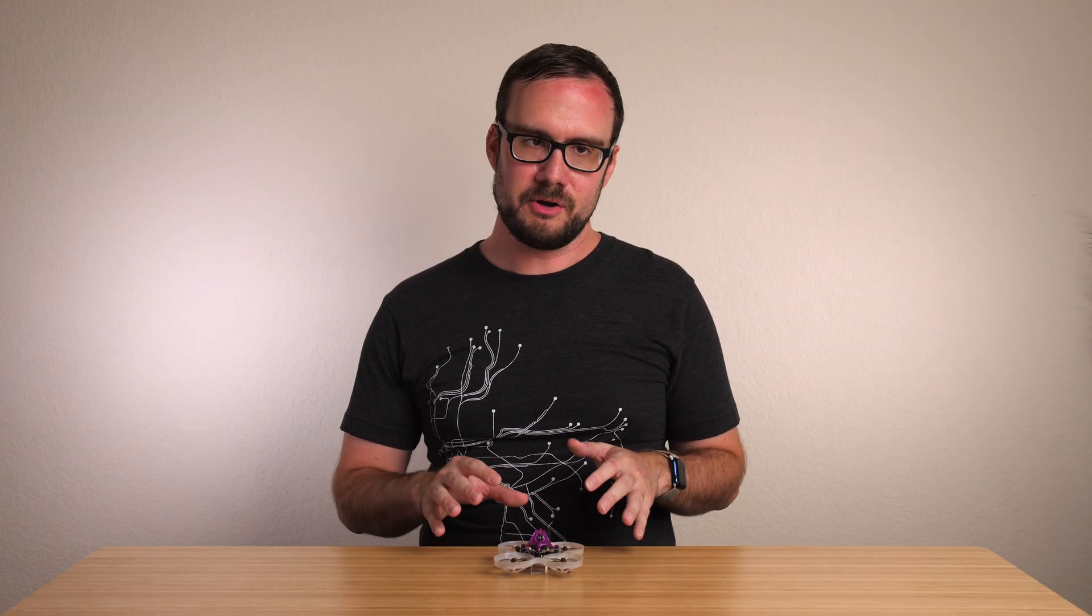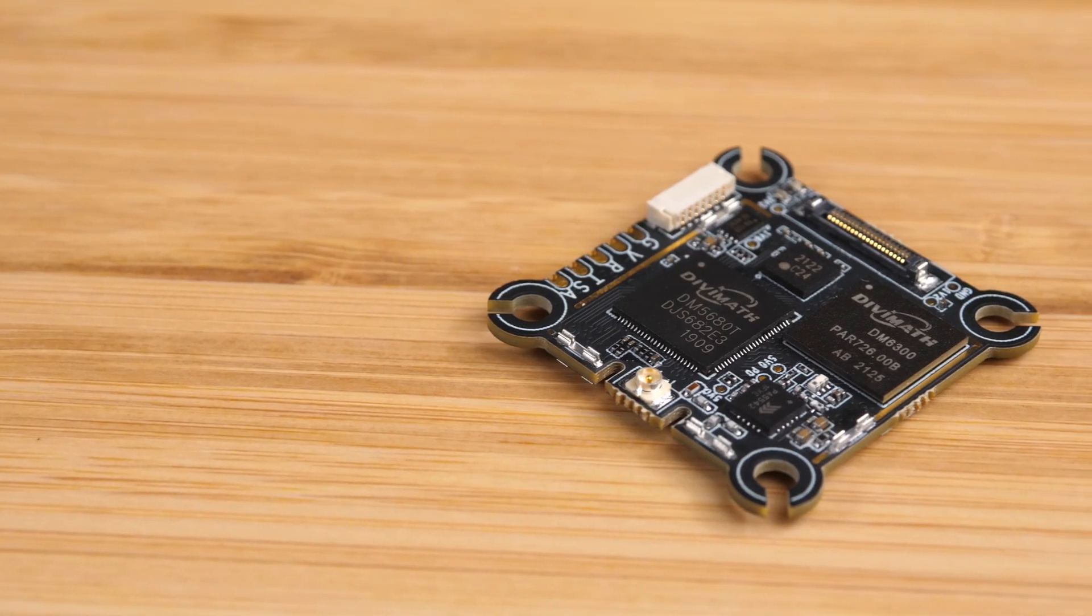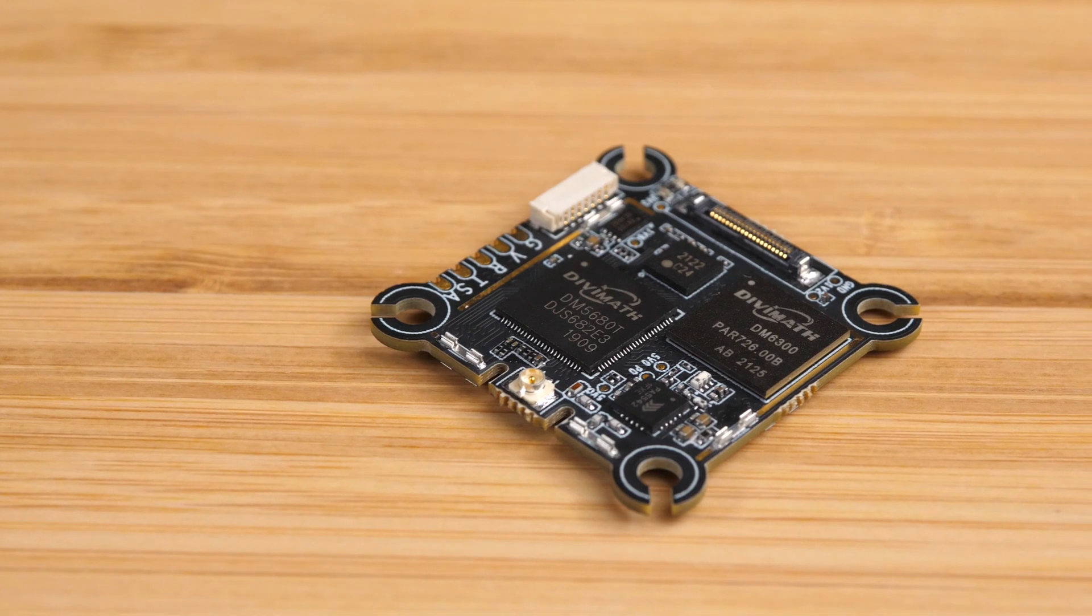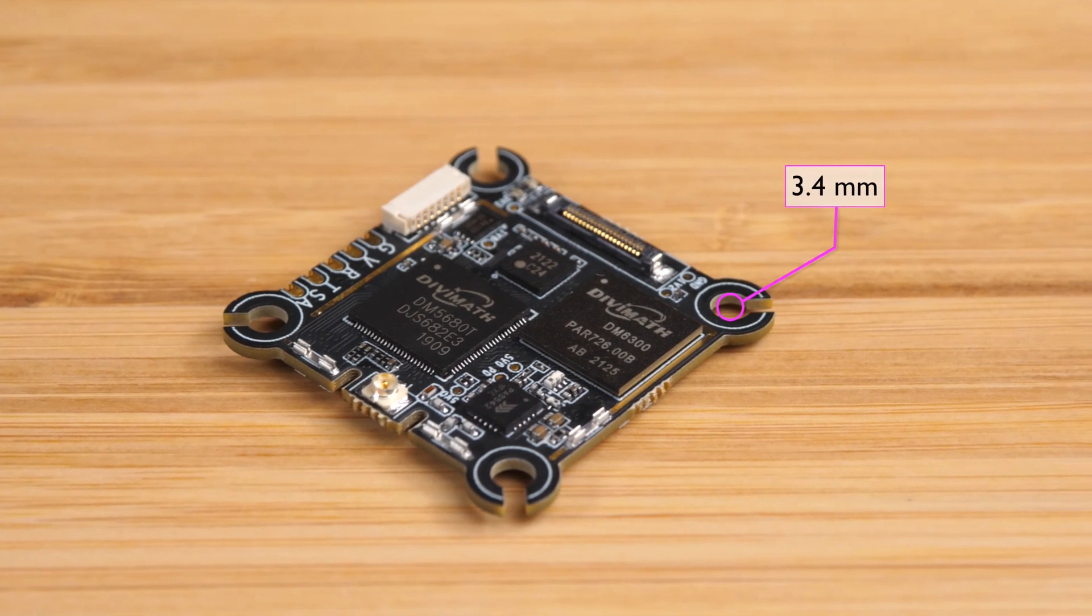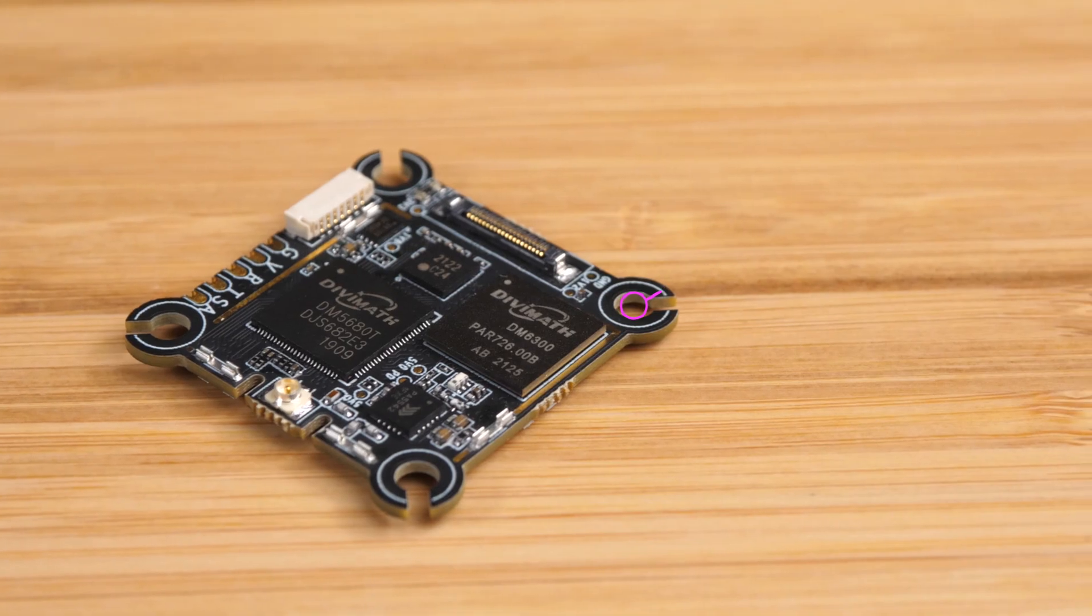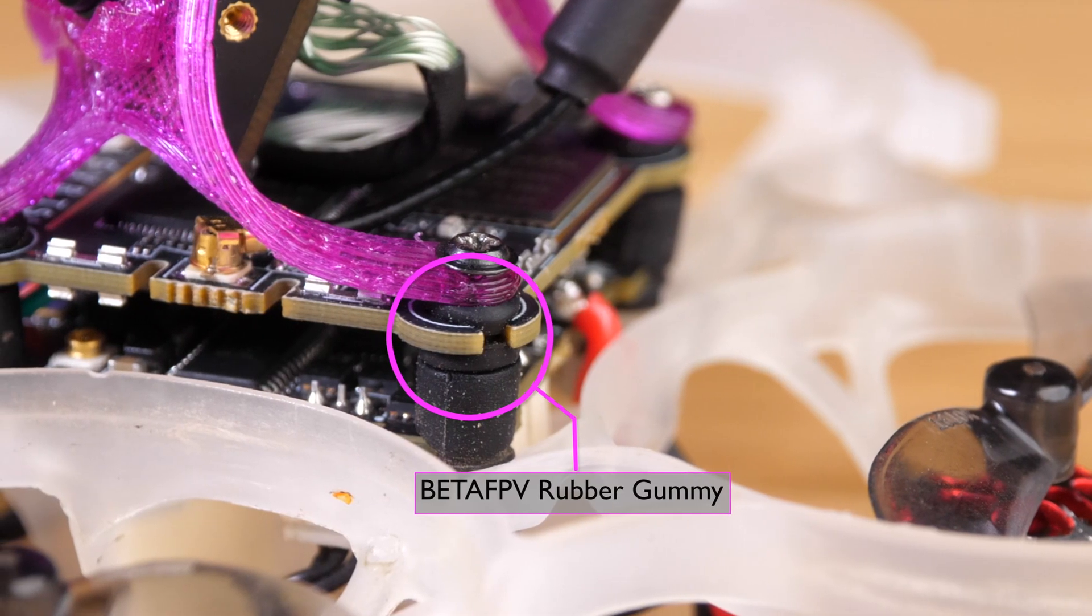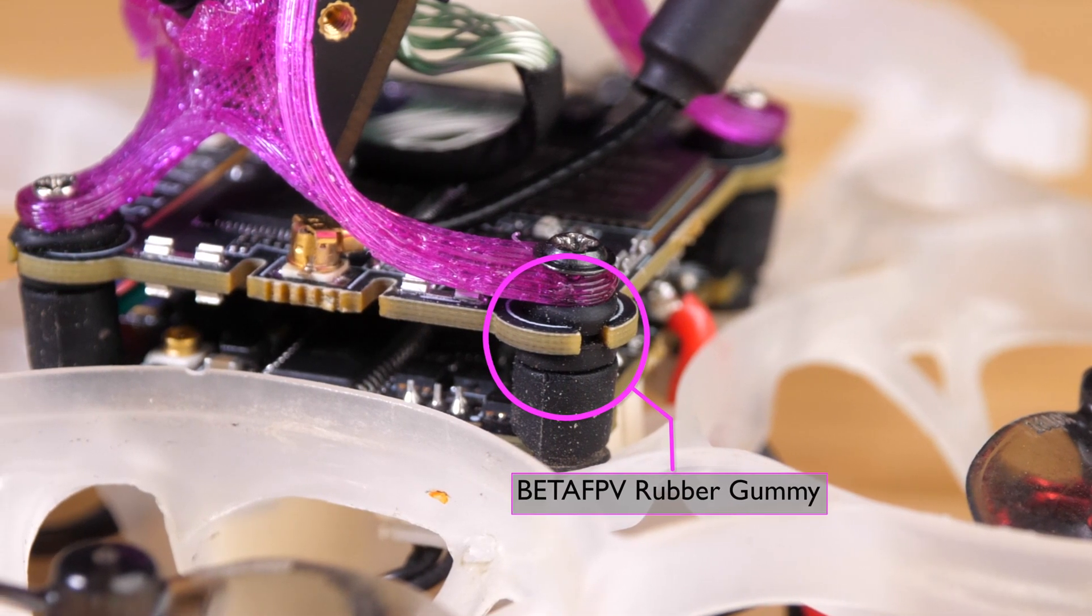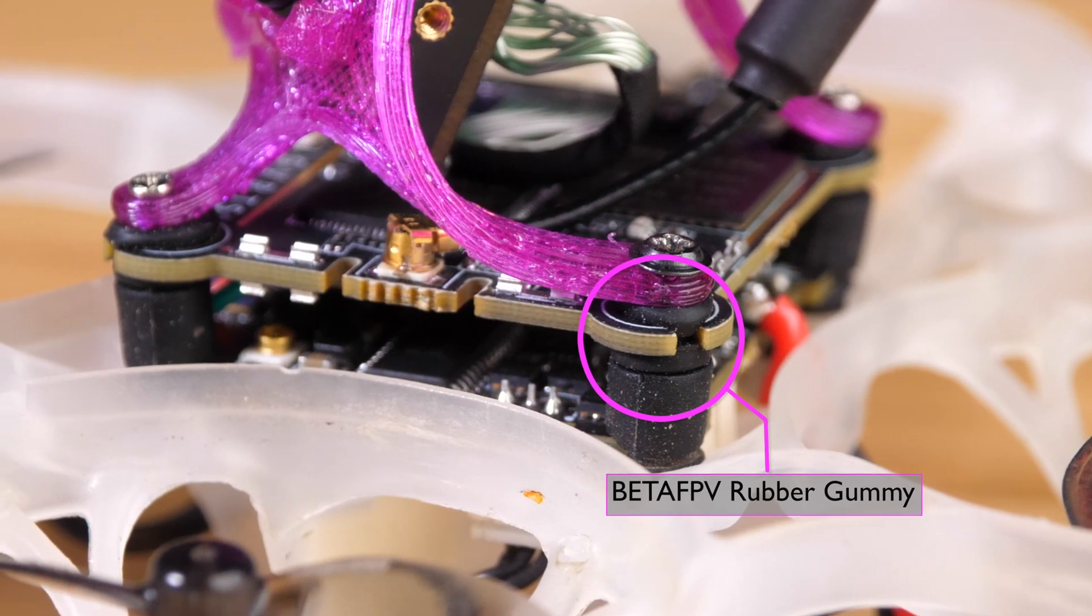I said we were going to come back to the mounting holes so let's cover that. This VTX is designed to soft mount with M2 screws so the mounting holes are about 3 millimeters to accommodate a rubber mounting gummy with the M2 screw. I found some that were a perfect size in a little kit from BetaFPV so I'll link that below if you're looking for a specific recommendation.